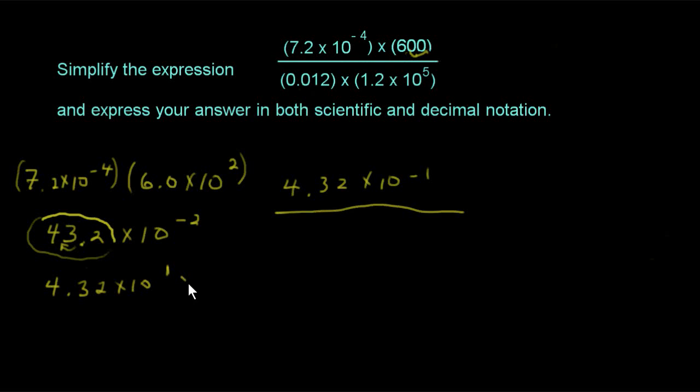Times 10 to the negative 2, which we just had here. To multiply our two exponent numbers, the numbers that have exponents, we just add the exponents together. One plus negative 2 is negative 1, and we end up with 4.32 times 10 to the negative 1.